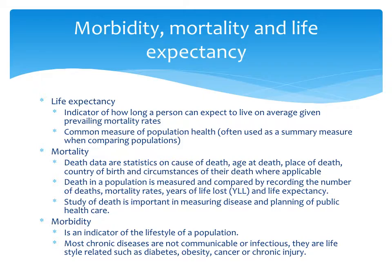Life expectancy is how long, on average from birth, a person is expected to live, and it is the most common measure used to compare population health. Mortality refers to death statistics — age of death, places of death, causes of death — and when examining NHPAs we look at mortality across cultures and age groups. Morbidity is an indicator of a population's lifestyle; most chronic diseases are not communicable but lifestyle-related, such as diabetes, obesity, cancer, and chronic injuries.